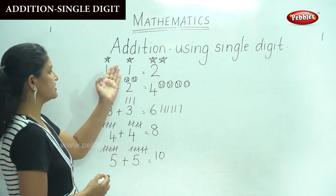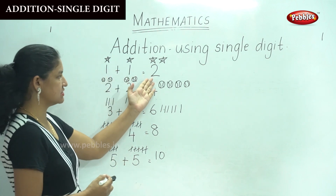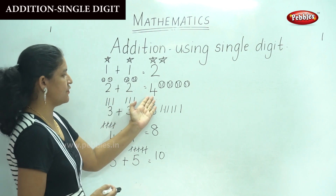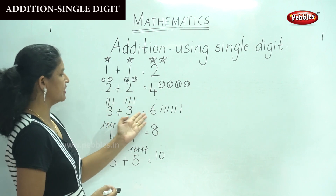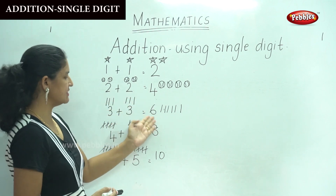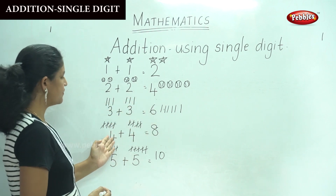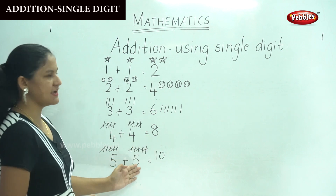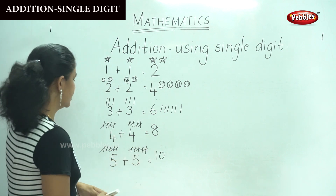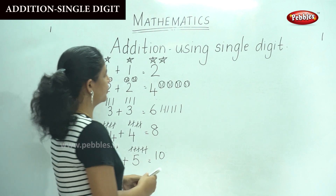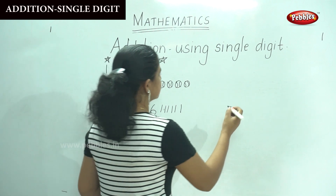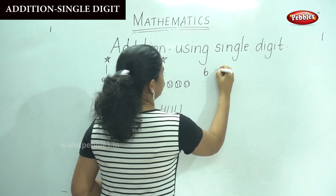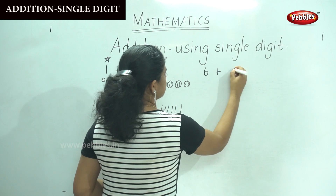So to recap: 1 plus 1 gives us 2, 2 plus 2 is 4, 3 plus 3 gives us 6, 4 plus 4 is 8, 5 plus 5 is 10. Now we are going to see 6 plus 6.